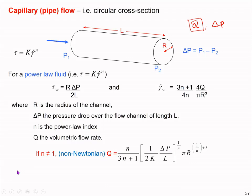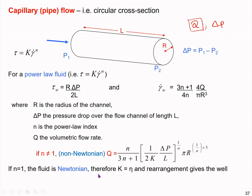I explained step by step how to get this volumetric flow rate equation for a non-Newtonian fluid inside a capillary channel which has a radius of r. Using the same equation, we can work out the volumetric flow rate for the same channel but with a Newtonian fluid by simply substituting n equals 1 and k equals eta.